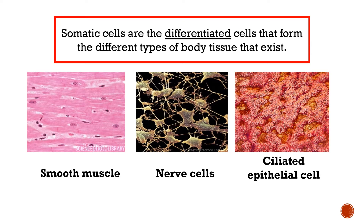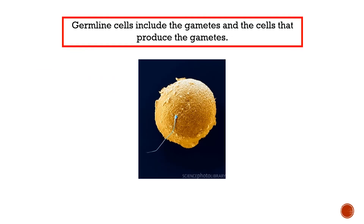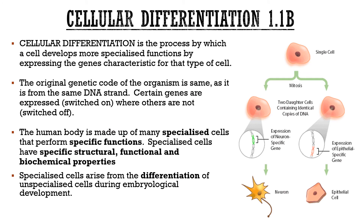To clarify: somatic cells are differentiated cells found throughout the body. A smooth muscle cell, a nerve cell, or a ciliated epithelial cell — what you'd find on the back of your throat — are all somatic cells. None of these cells are involved in reproduction, but they are all very different from one another. Germline cells are just the gametes: sperm and egg. So why are somatic cells so different? That's through a process called cellular differentiation.